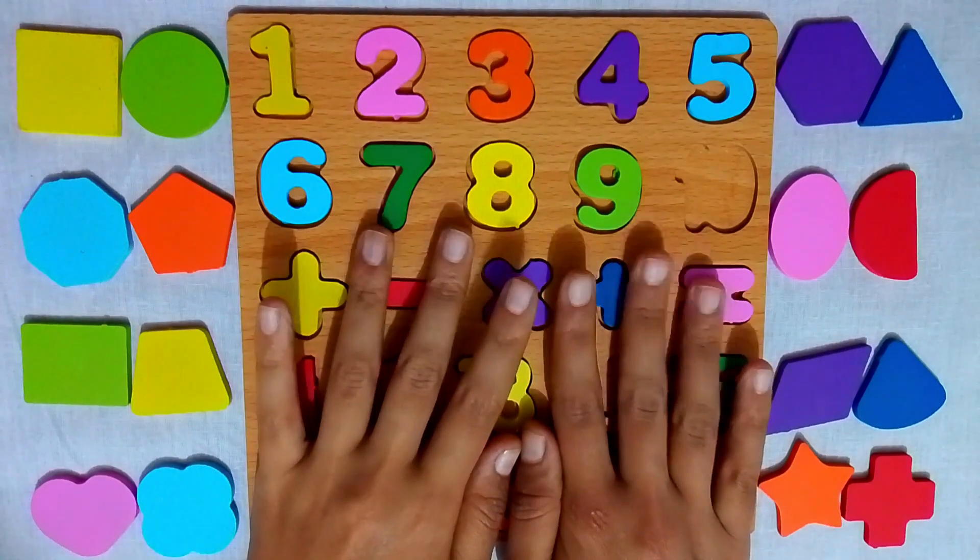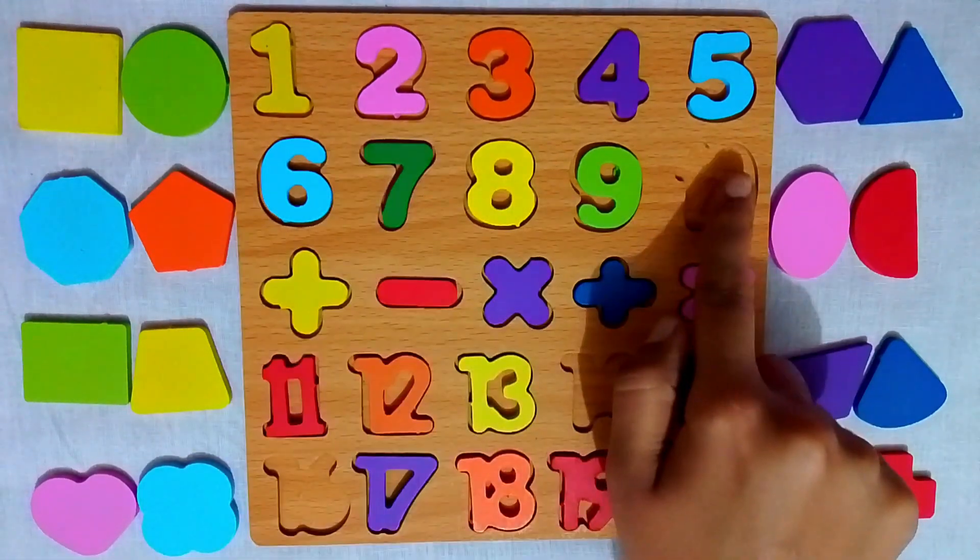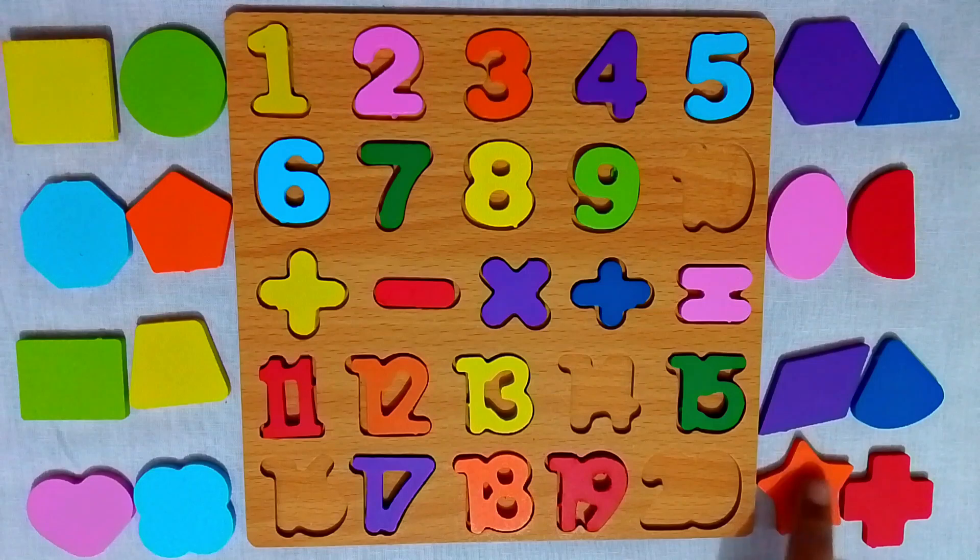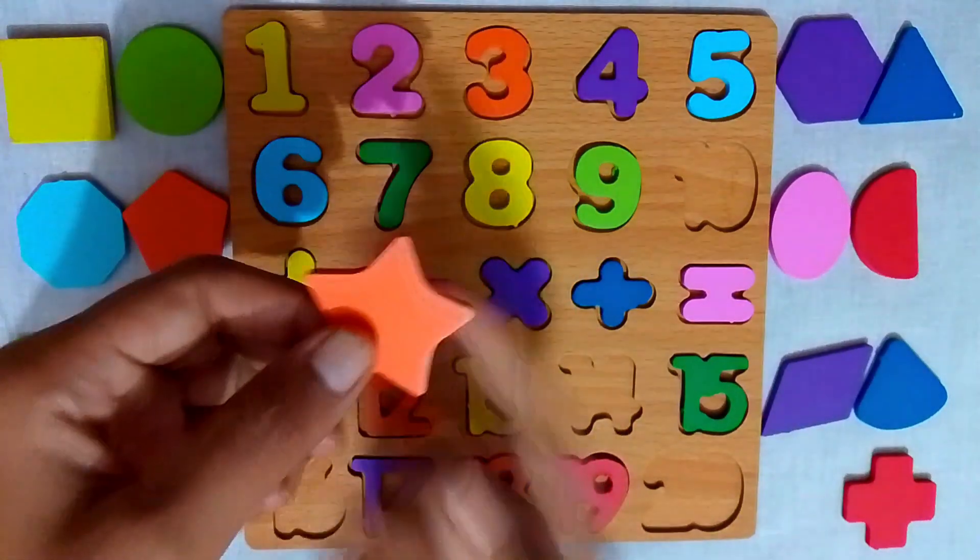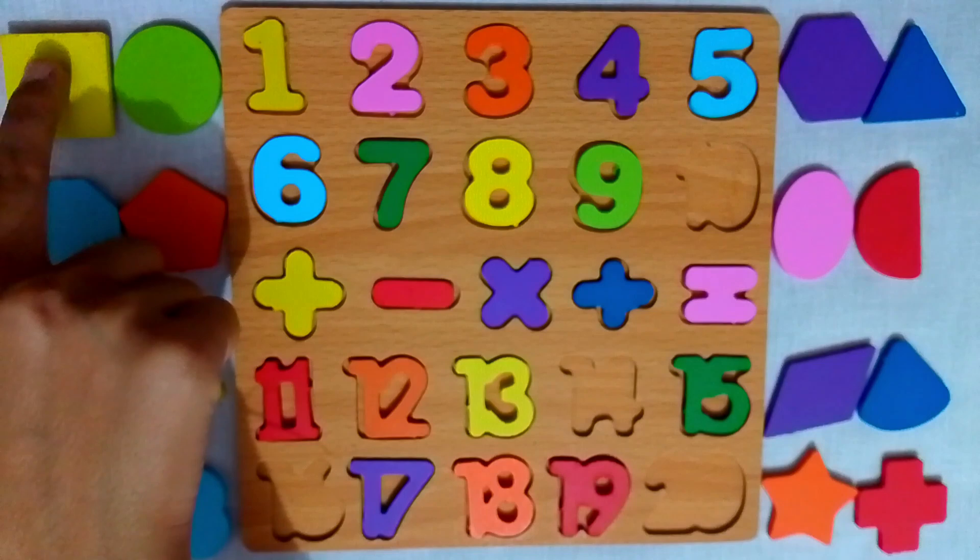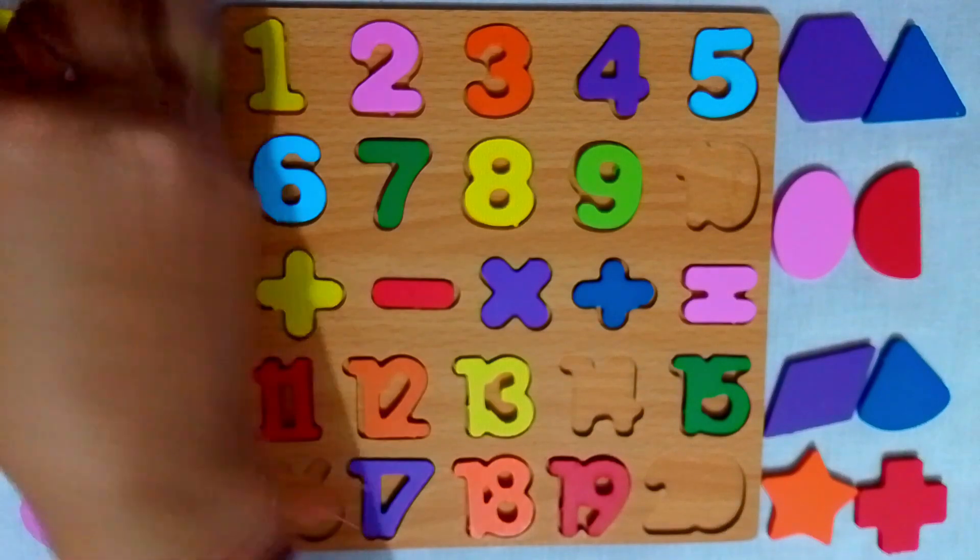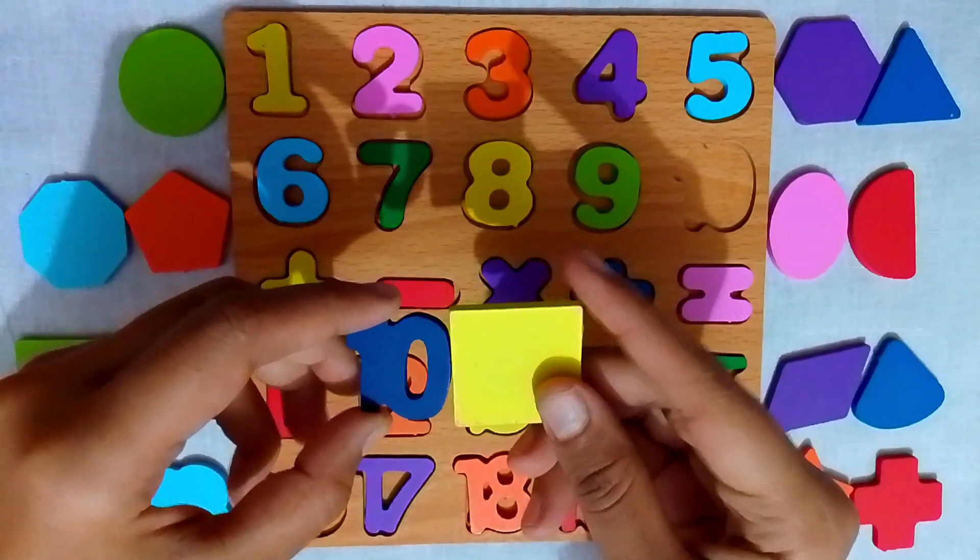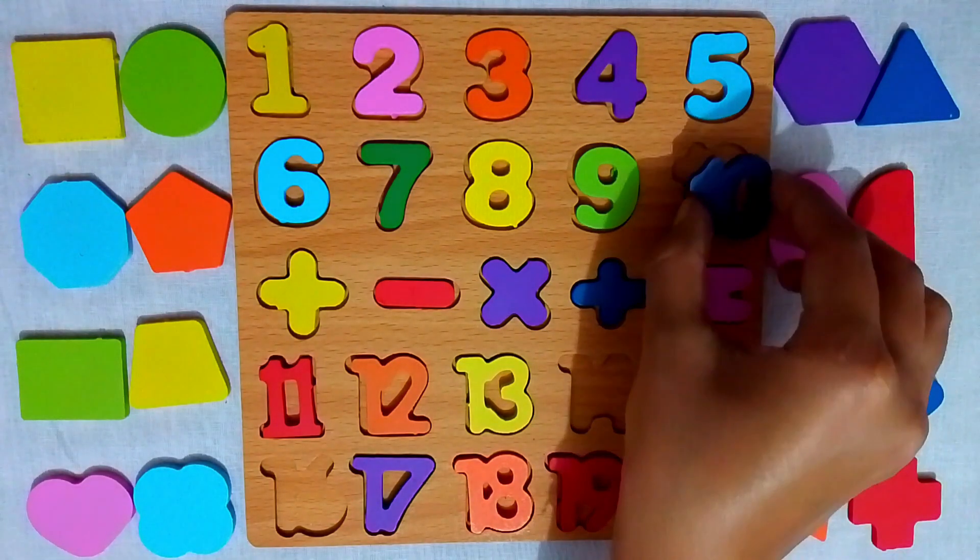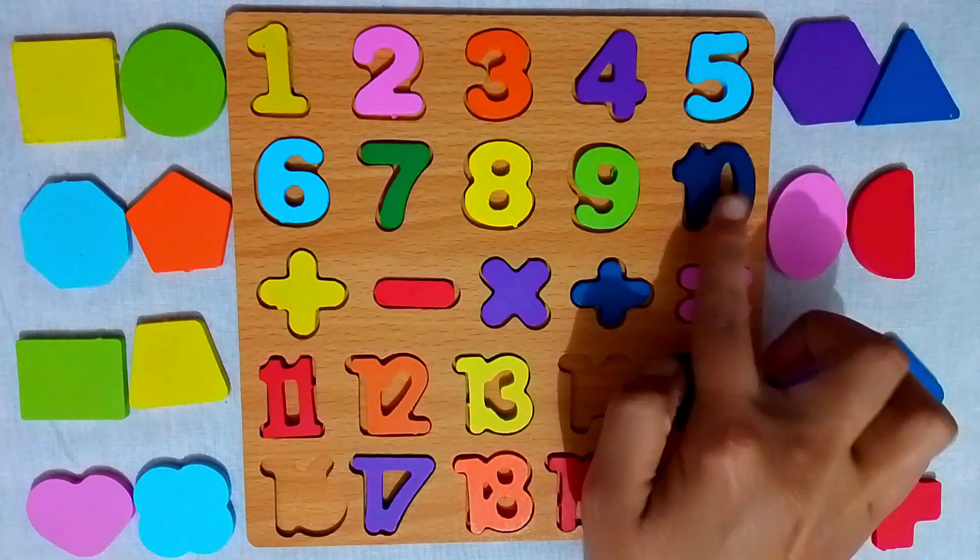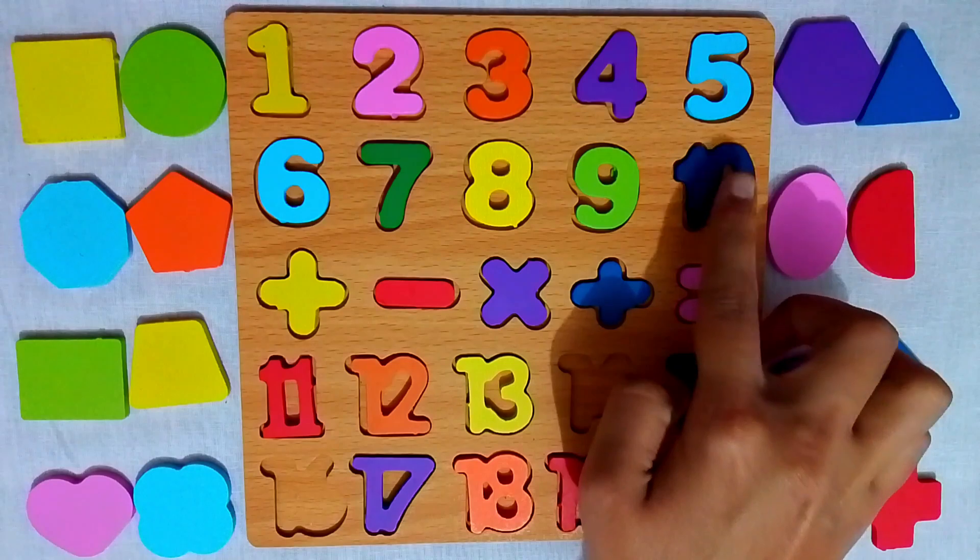Now, number 10. Maybe in the star. Let's open. Oh no, not here. How about the square? Yes! Number 10 is here. Great! Now we'll put number 10 in its place, between 9 and 11. Perfect spot.